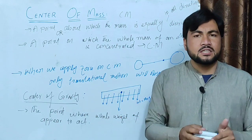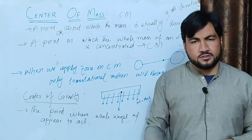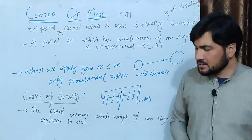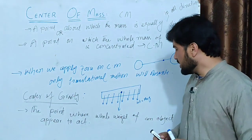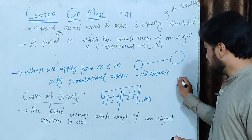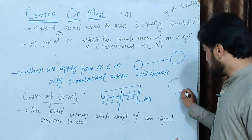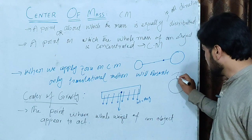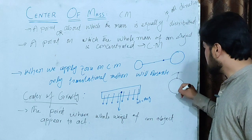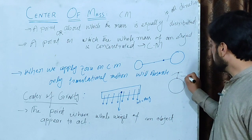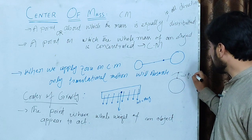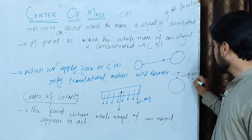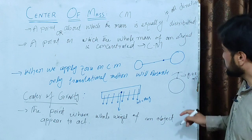The center of gravity is the same as the center of mass. The value of g is constant at 9.8 meters per second squared.